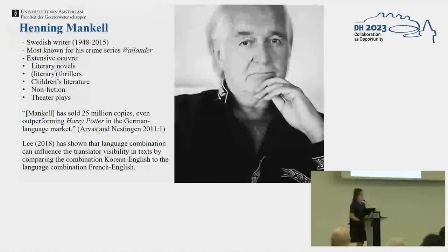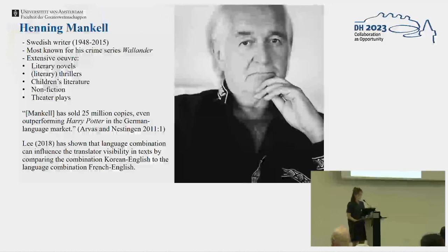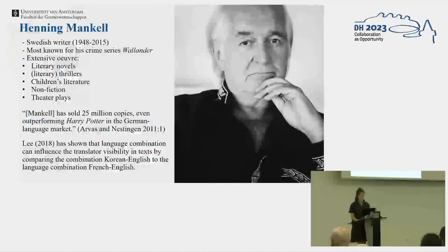For this study, I looked at the oeuvre of Henning Mankell, a Swedish writer very well known for his crime series Wallander. But he also has a very extensive oeuvre — he wrote literary novels, children's literature, non-fiction, and theater plays. I'm using his oeuvre, only one author, because I wanted to take out the factor of author, since it's so important. I wanted to see what happens if you look at mainly one author and different translators.